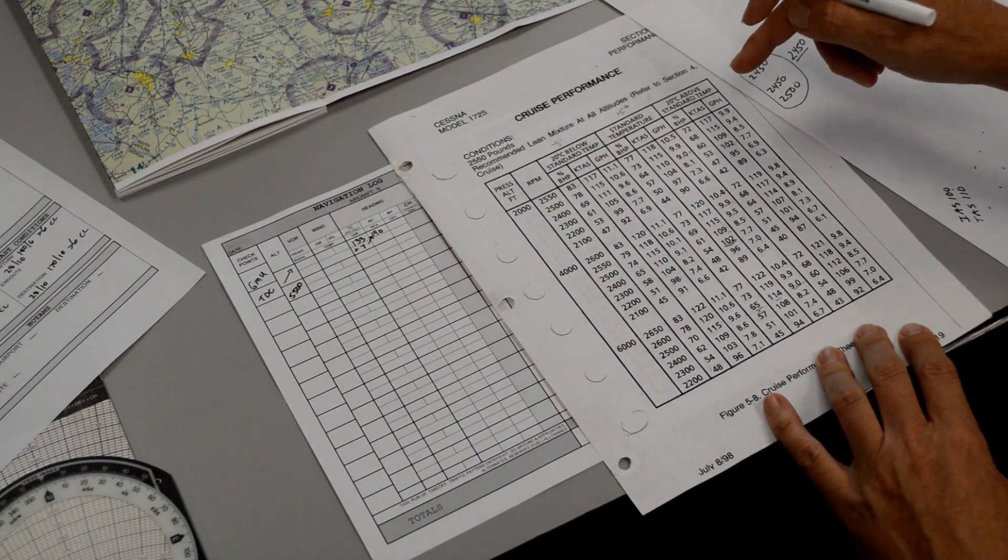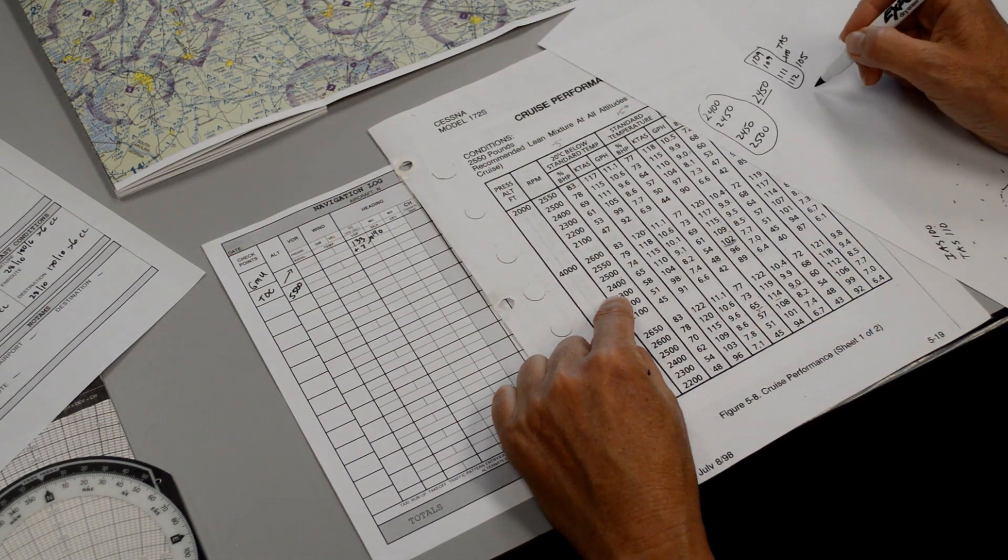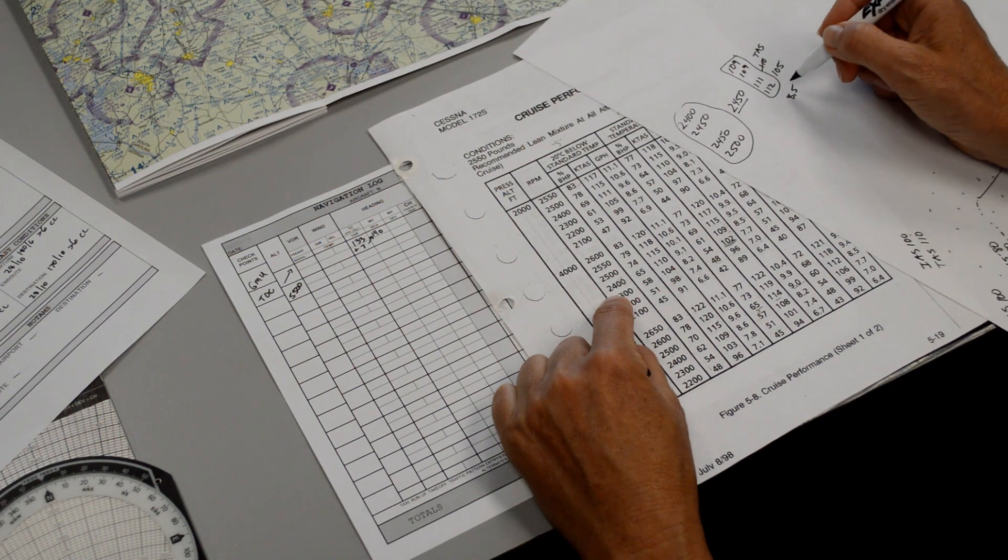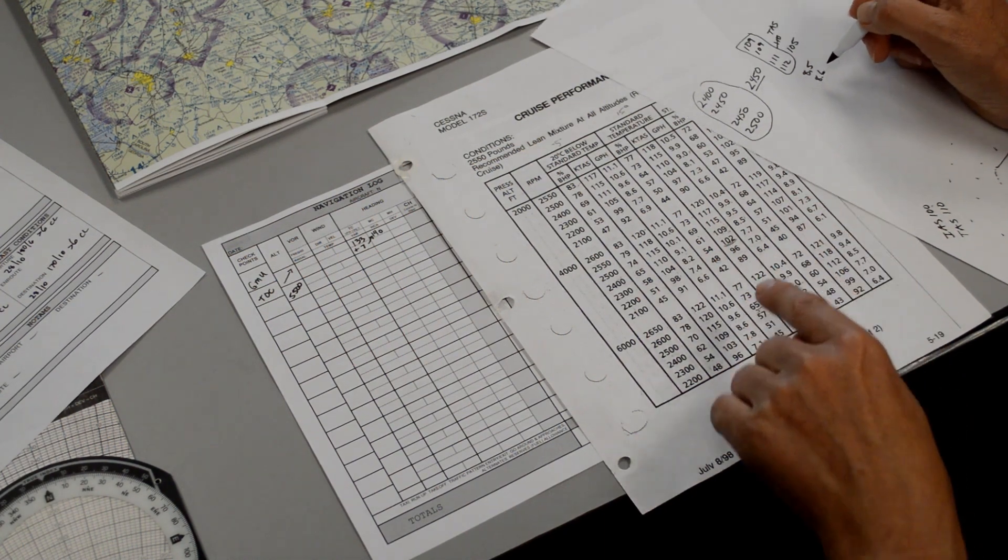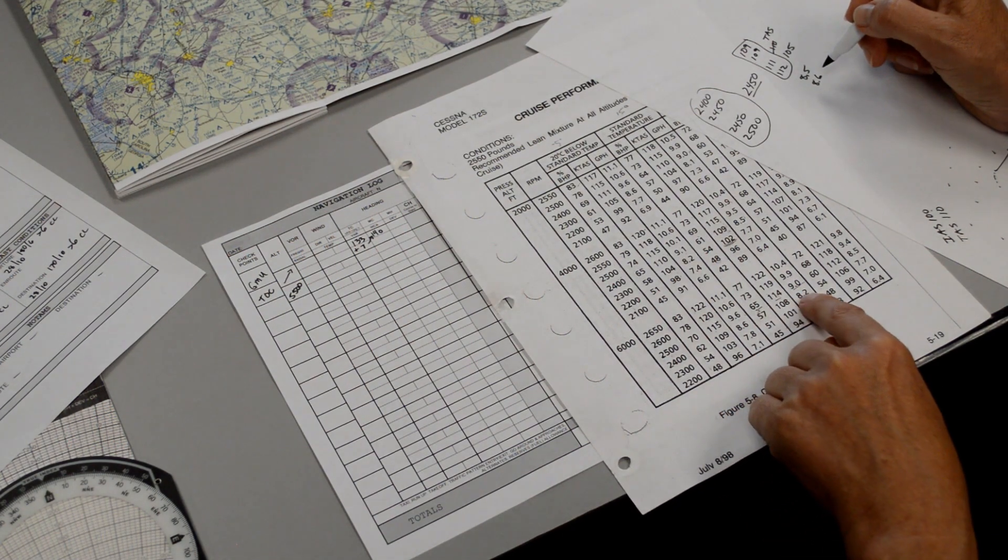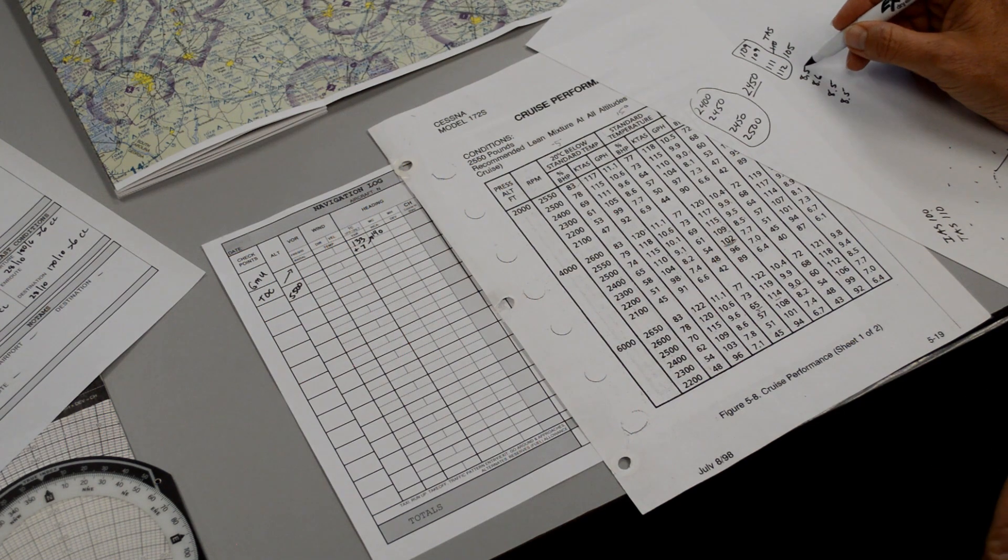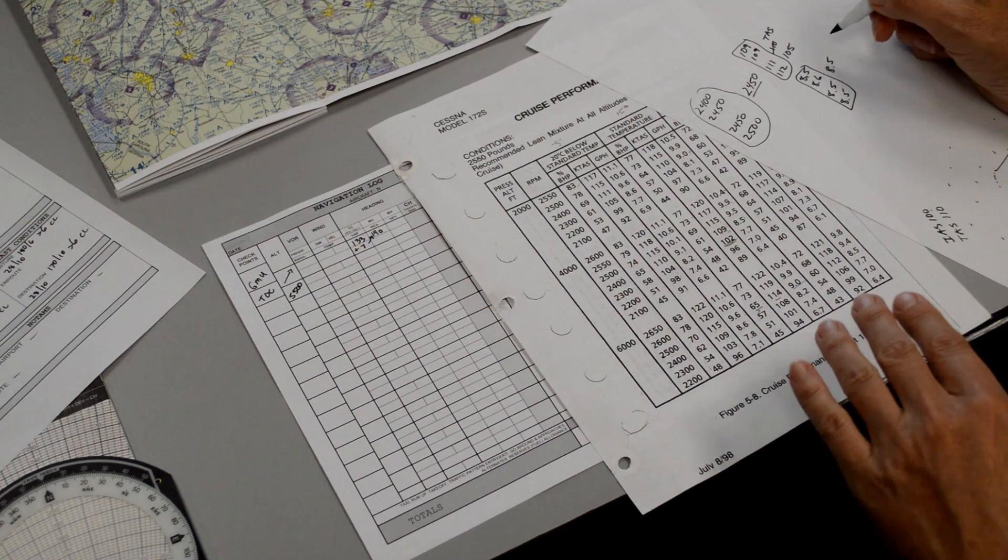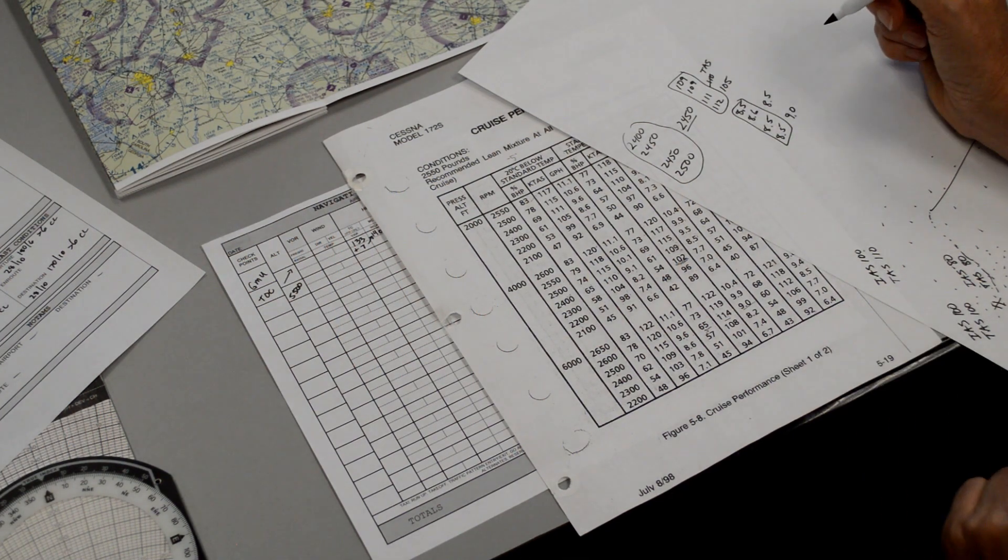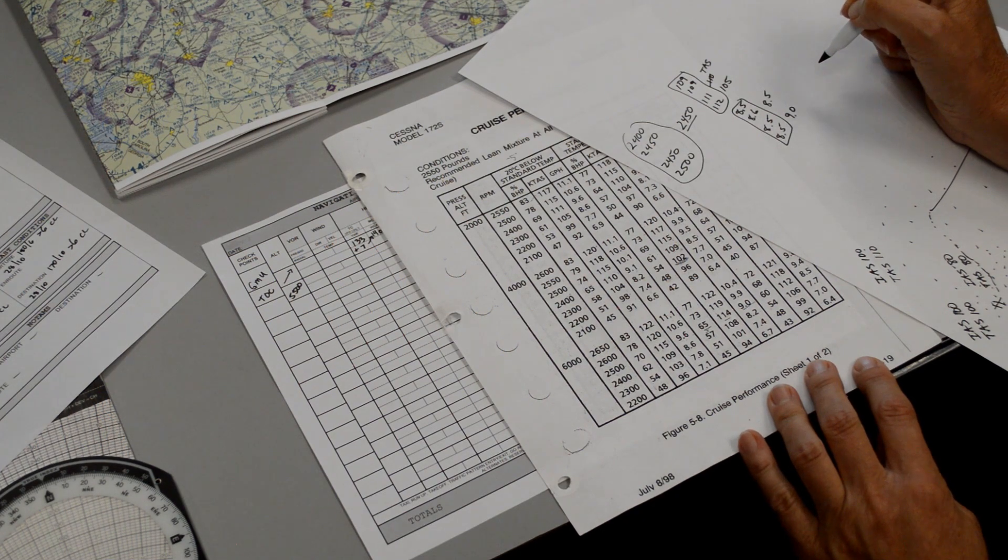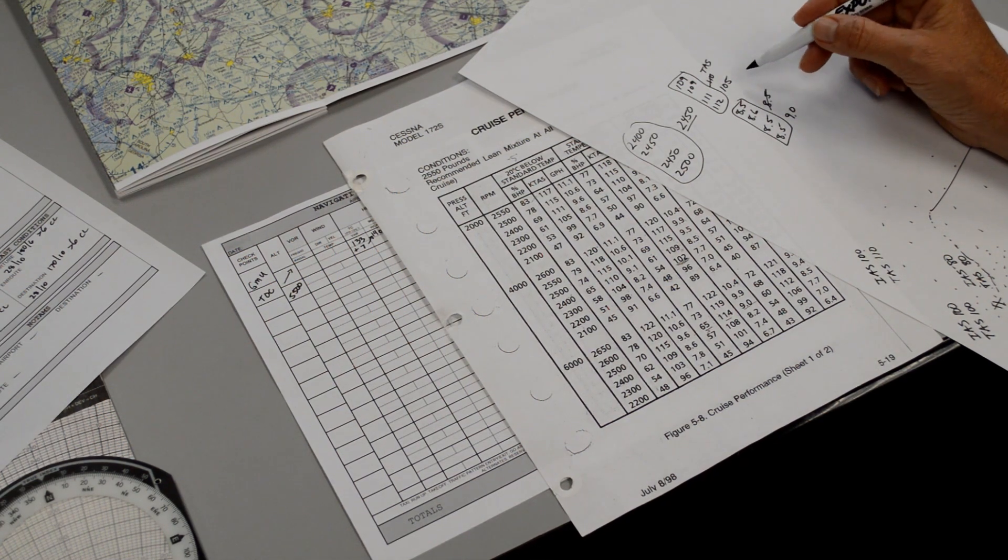The next thing we can pull off here is our gallons per hour. So gallons per hour, it looks like it ranges anywhere between about 8.5 and 8.6, and then down here at 60% power, the fuel burn looks like about 8.5. So 8.5 looks like the fuel burn for our journey according to the book values, but we would round that up a bit and make it at least 9 just to be conservative, because maybe you didn't lean it properly or maybe the mixture setting is not set properly for the aircraft. It's not a brand new airplane and we're not perfect pilots, so we would like to round our numbers to a more safe number.